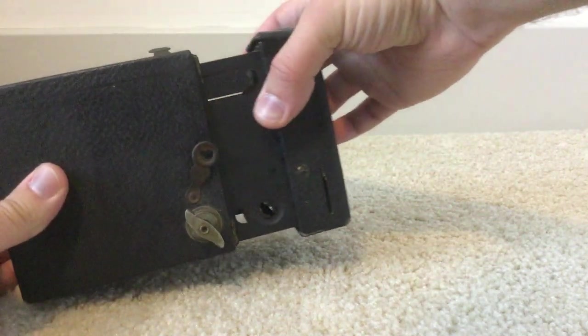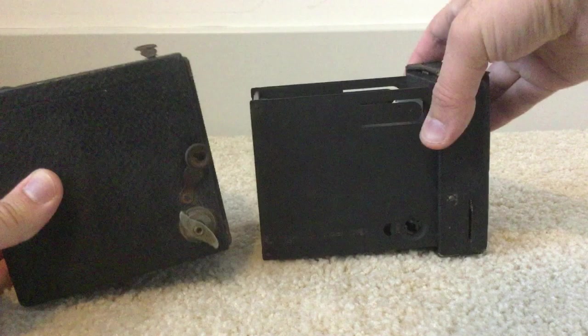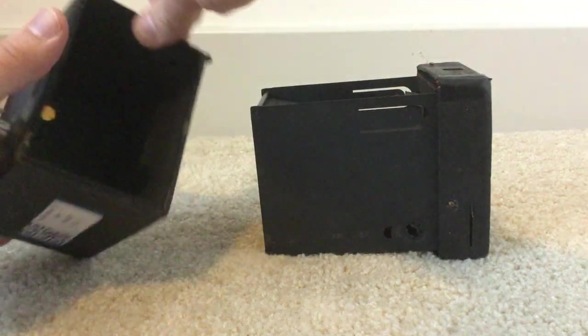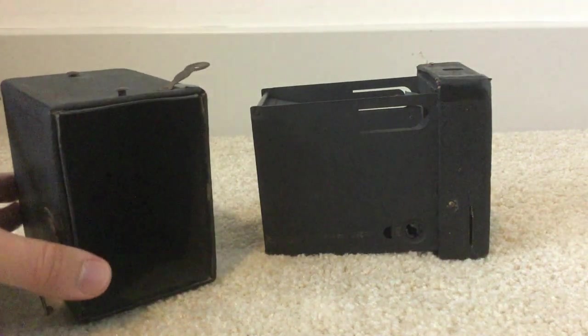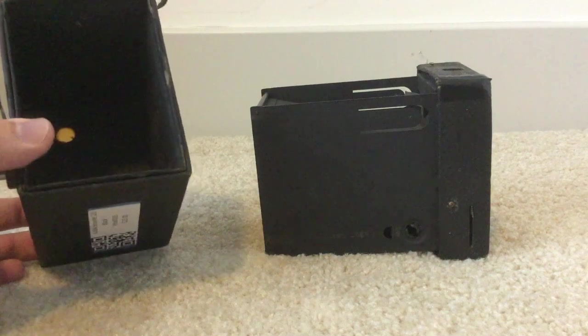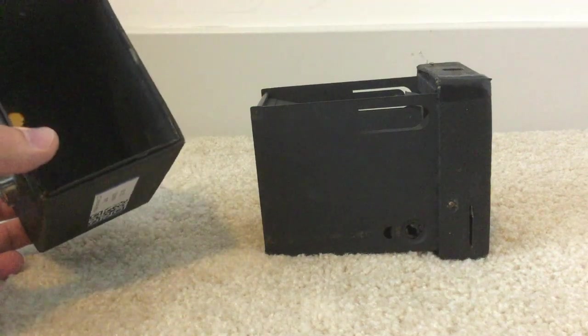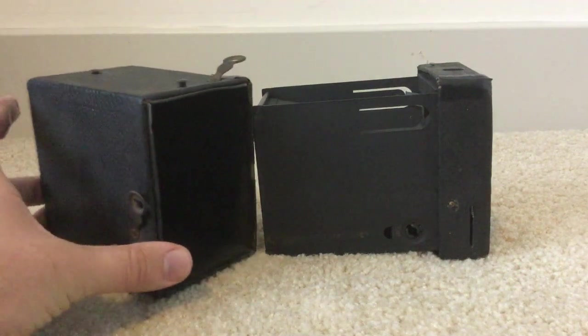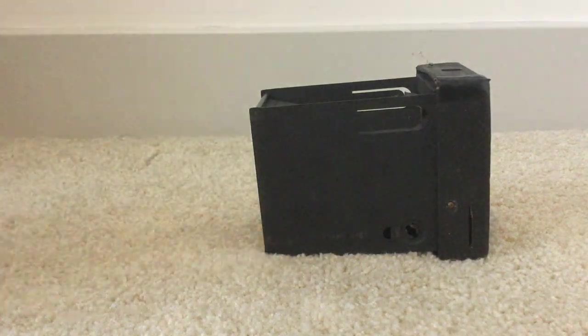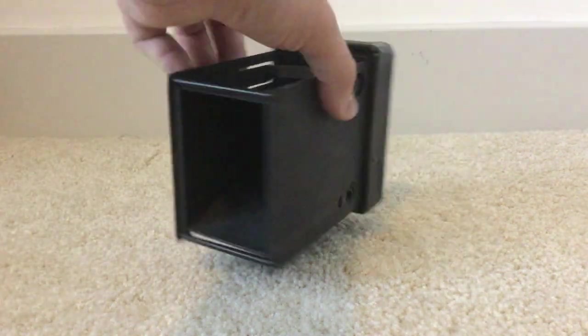We're going to very gently remove both parts of the camera. Just be gentle because they're usually over a hundred years old or about a hundred years old. So you don't want to poke any holes on the camera so it affects your photograph. You're going to put the back on the side and we're going to focus on the inside part.